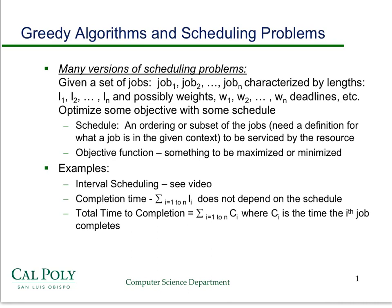In this screencast I want to talk about another problem for which there's a good greedy solution. The problem is one of a number of problems called scheduling problems, which are important in computer science. Generally speaking, in a scheduling problem you're given a set of jobs J1 through JN characterized by parameters such as length, weight, deadline, etc. The goal is to find an ordering or subset of jobs that maximizes or minimizes some objective function.